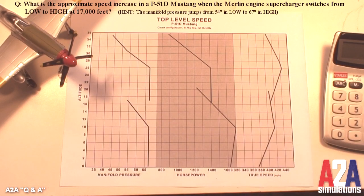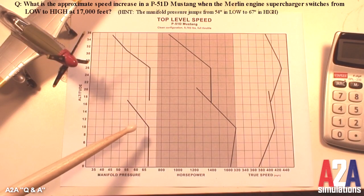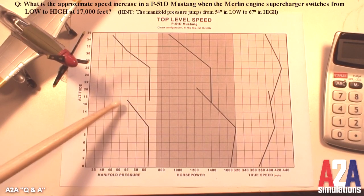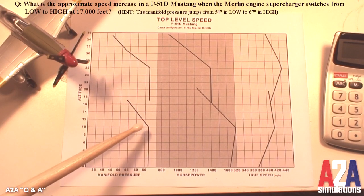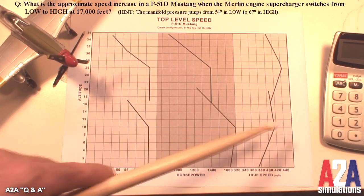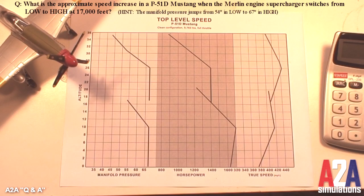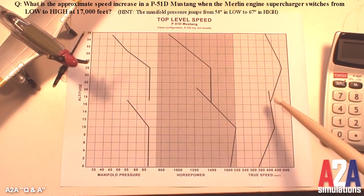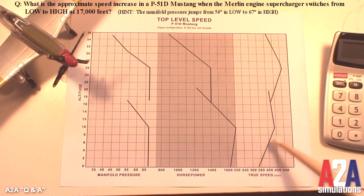And right here you can see at 10,000 feet the manifold pressure starts to drift downward. That's because the low speed supercharger just cannot keep up with the thinner air and the faster air speed. So our horsepower starts to drop off and we actually get a slight decrease in speed. The slight decrease, it's only slight because it's being offset by the continued benefits that we're getting from the thinner air.